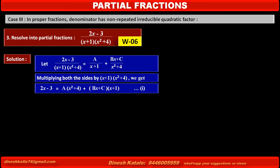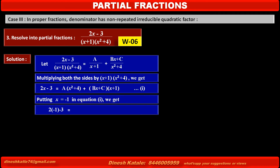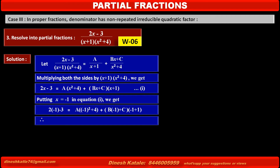Consider this as equation 1. To find the value of A, we cancel the terms with B and C by making the factor (x plus 1) equal to zero. Putting x equal to minus 1 in equation 1, the left-hand side gives 2(minus 1) minus 3. The right-hand side first term becomes A((-1)² plus 4), and the second term becomes (B(minus 1) plus C)(minus 1 plus 1).